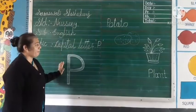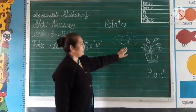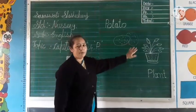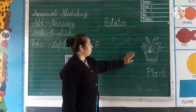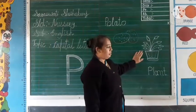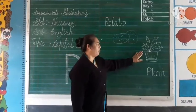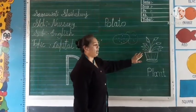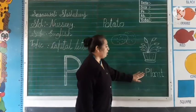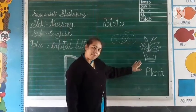P for potato. This is the potato. Do you know? And this one, what is this? Do you know? This is a plant. P for plant.